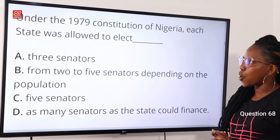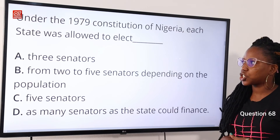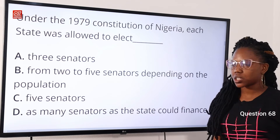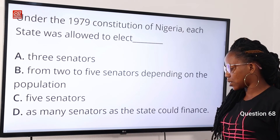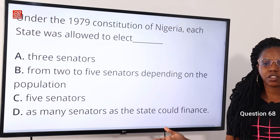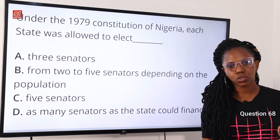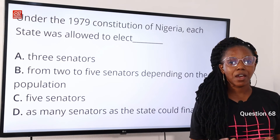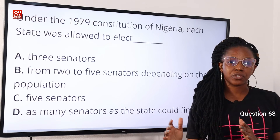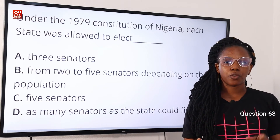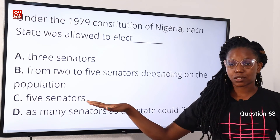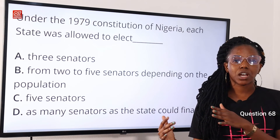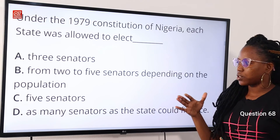Question 68: under the 1979 constitution of Nigeria, each state was allowed to elect — option A, three senators; option B, two to five senators depending on population; option C, five senators; option D, as many senators as the state could finance. The answer is option C, five senators. Under the 1979 constitution, each state was divided into five districts, each electing one senator, giving five senators per state. Under the 1999 constitution, a state had three senators, with the federal capital territory adding one extra. Option C is the correct answer.